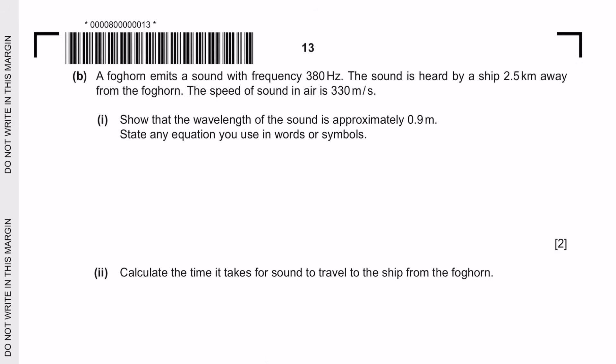Next question B. A foghorn emits a sound with a frequency 380 hertz. The sound is heard by a sheep 2.5 kilometers away and the speed of the sound is 330 meters per second. State the wavelength of the sound is approximately 0.9 meters and state any equation you use.